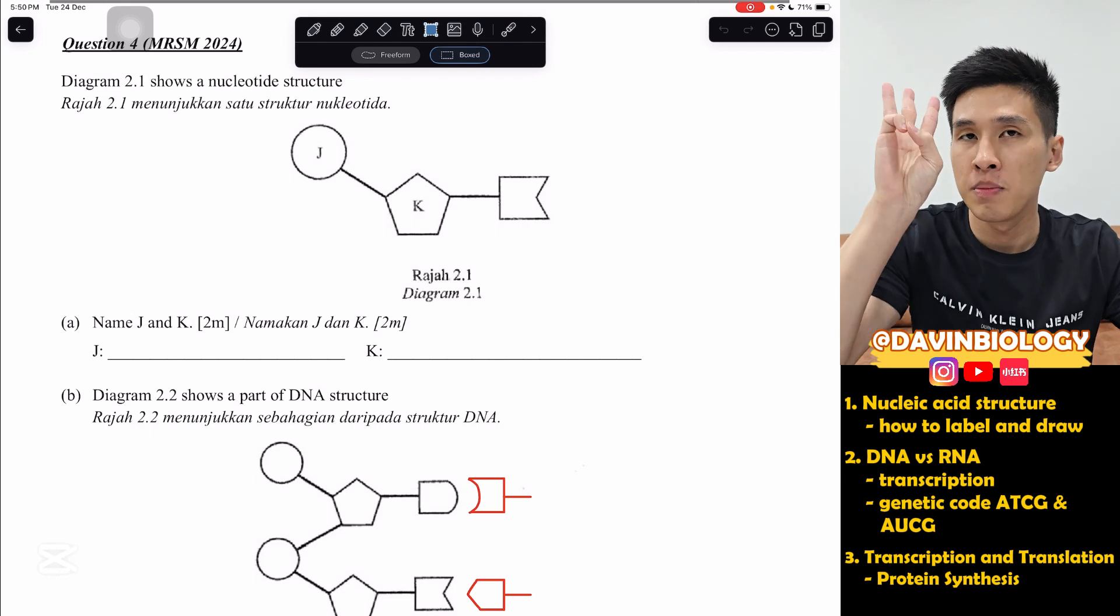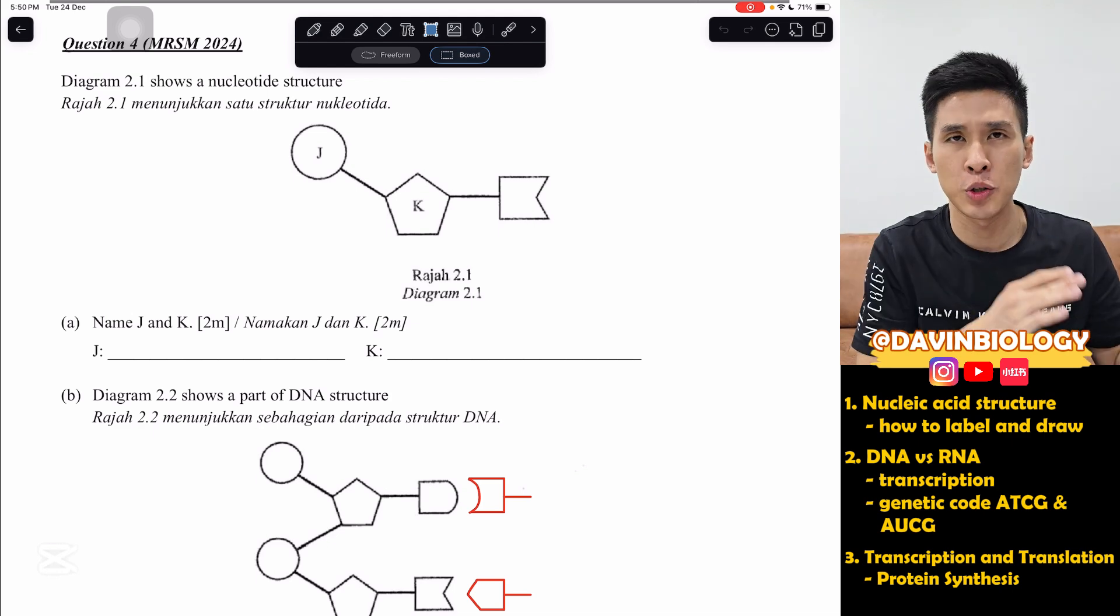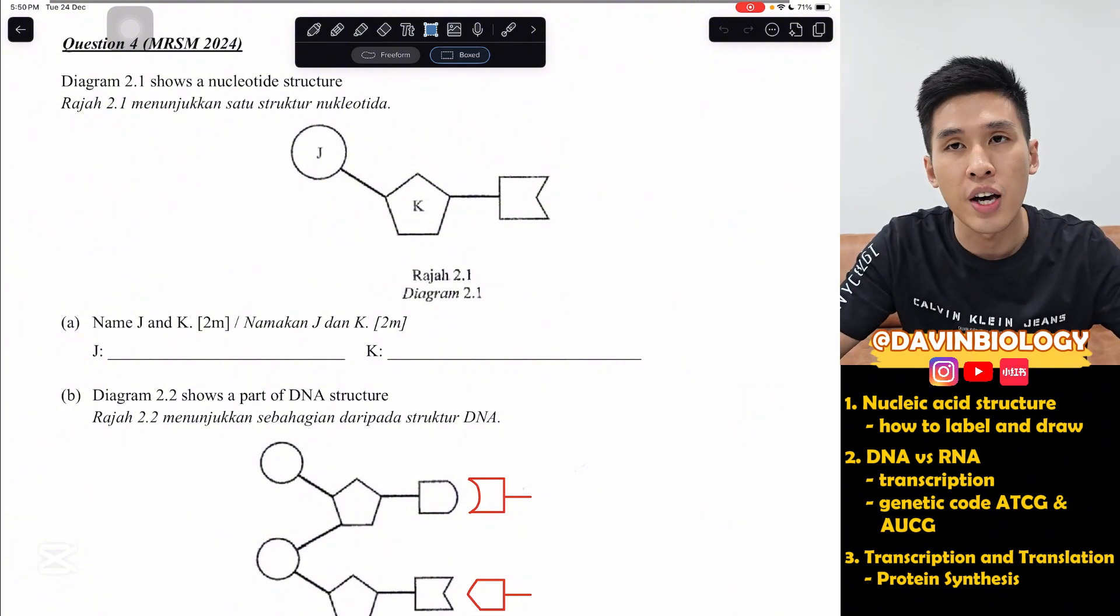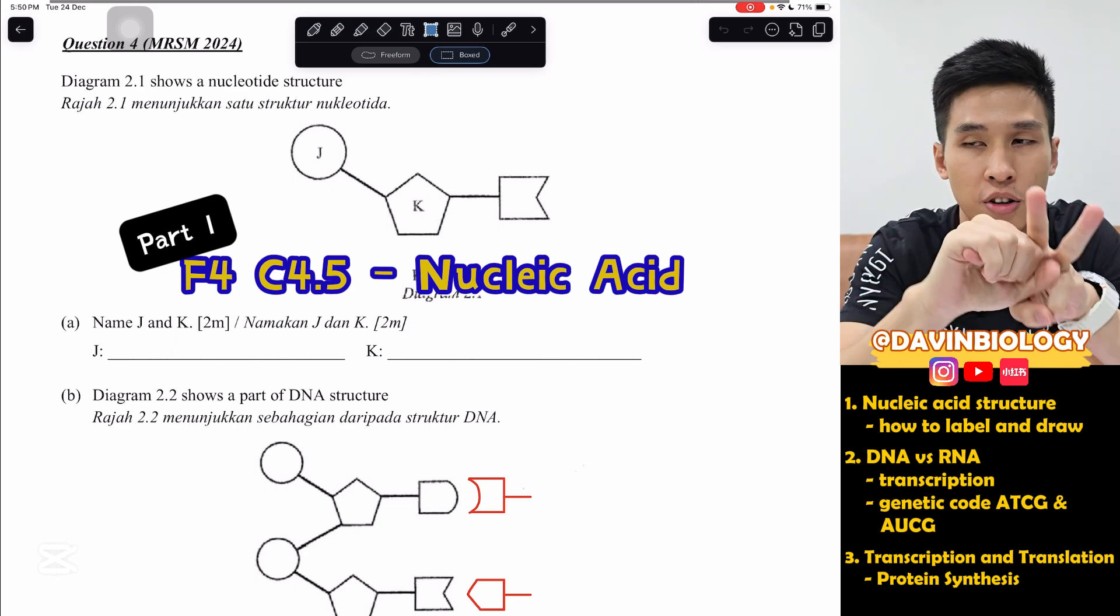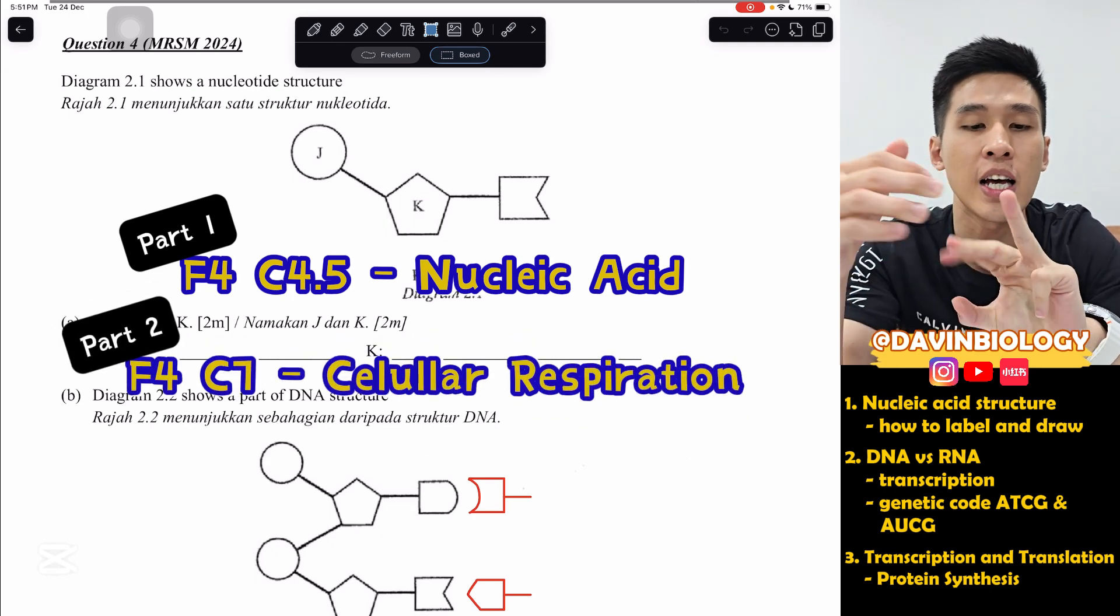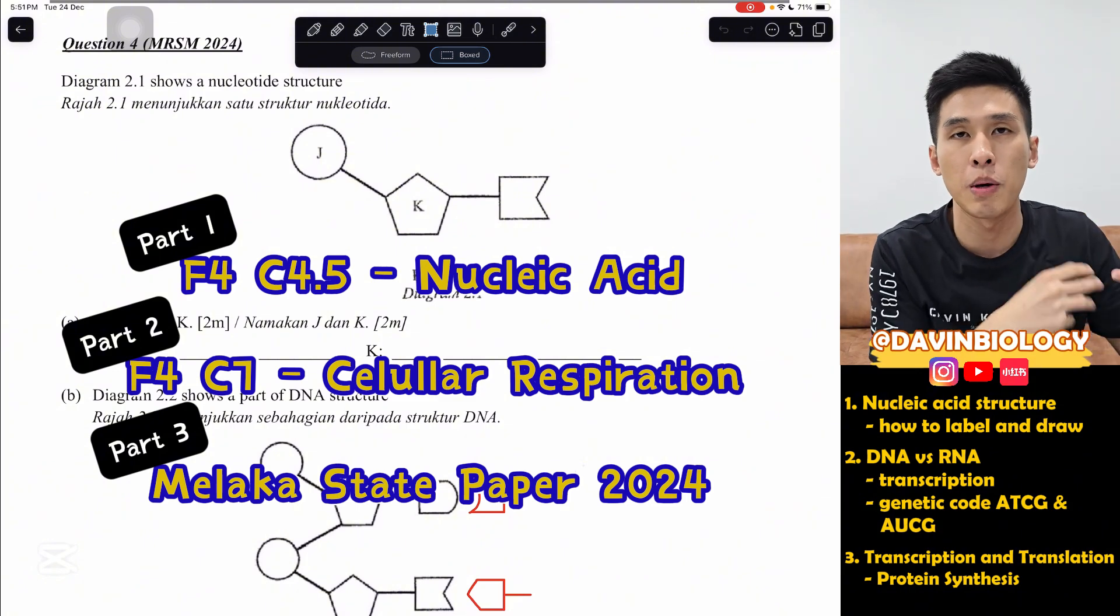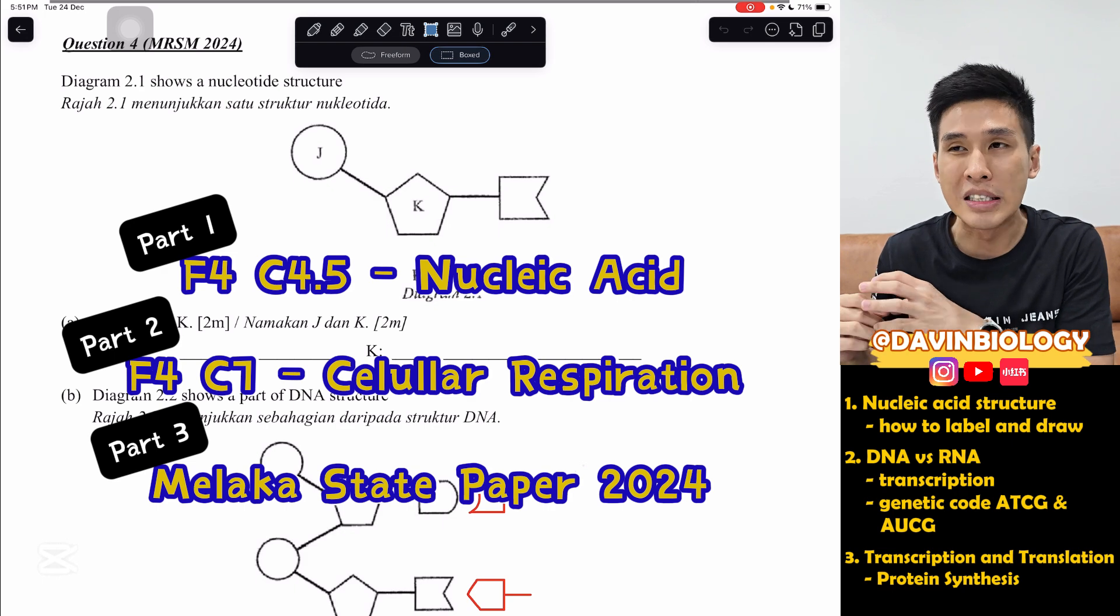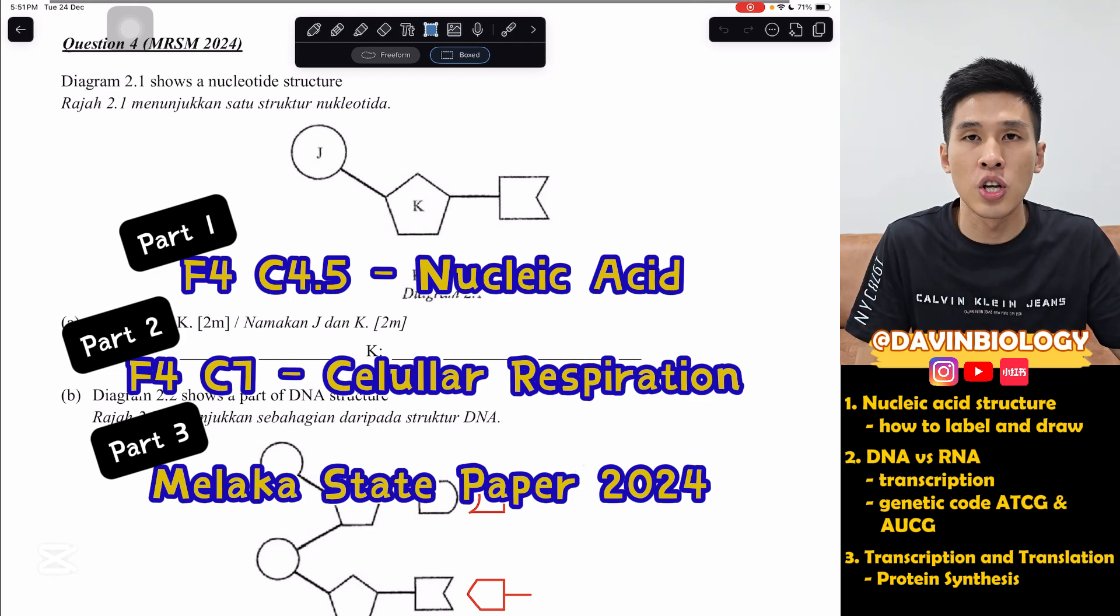Yo, welcome back to DeviantBiology. I'll be doing a three-part mini-series of state trial video for students sitting for 2024 bio SPM. But if you are from Form 4 or Form 5 students in 2025, these videos are very useful also because all these questions are in the state trials. School teachers like to use these kind of questions for your exam. In this three-part video, the first part, I've been doing Form 4, Chapter 4, 4.5 Nucleic Acid specifically. Then we have Chapter 7, Form 4, Cellular Respiration. And the last one, I'll be doing a full state paper, Melaka 2024 paper.